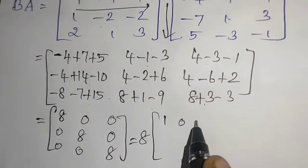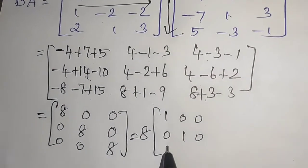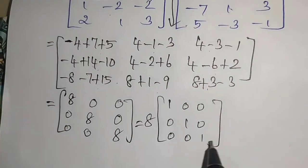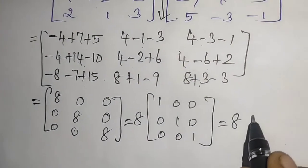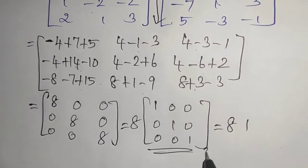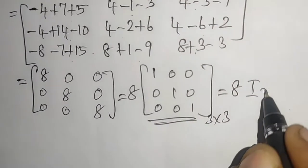So 8 times the matrix 1, 0, 0, 0, 1, 0, 0, 0, 1. So I3, 8 into I3.